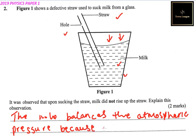No vacuum is created — because of the hole on the straw. That is how you answer that question: no vacuum is created as a result of the hole on the straw.